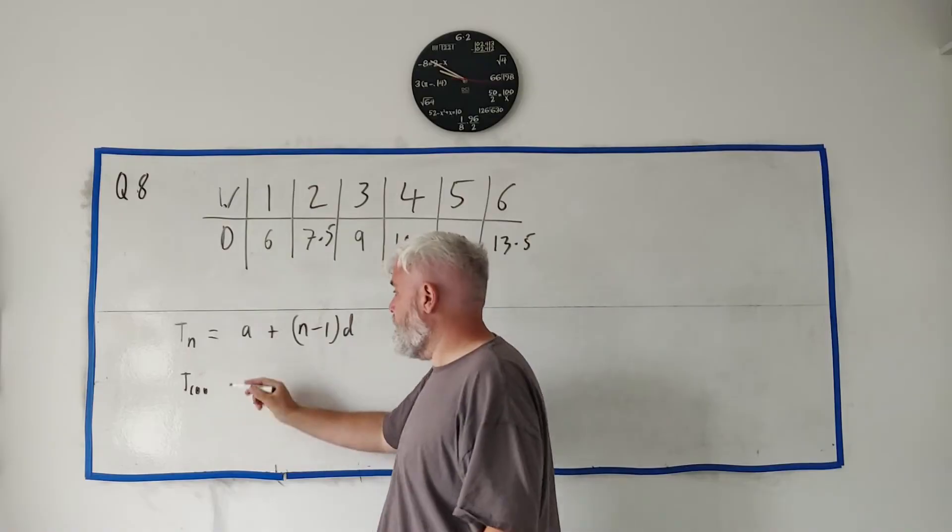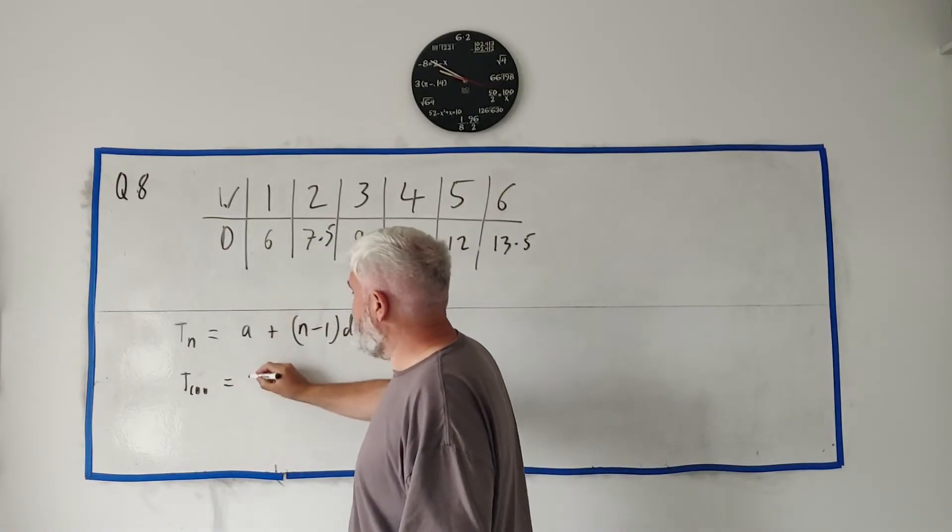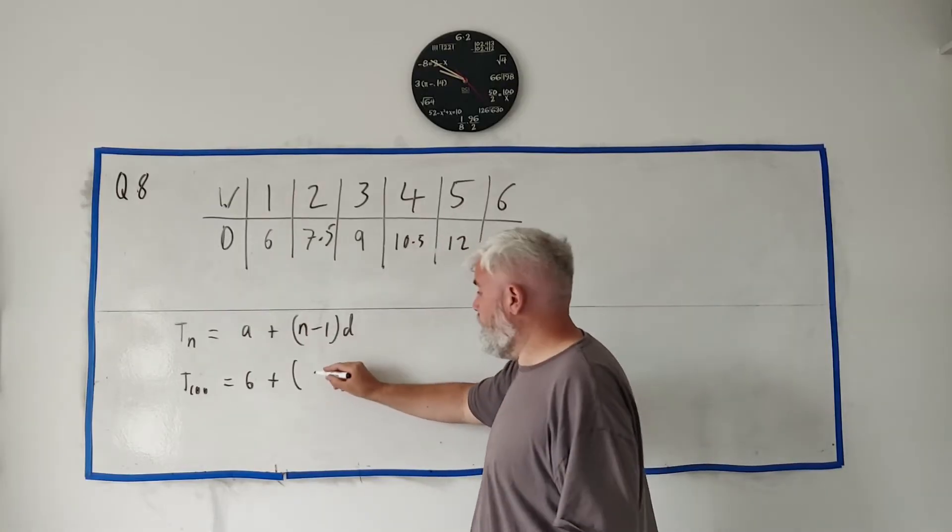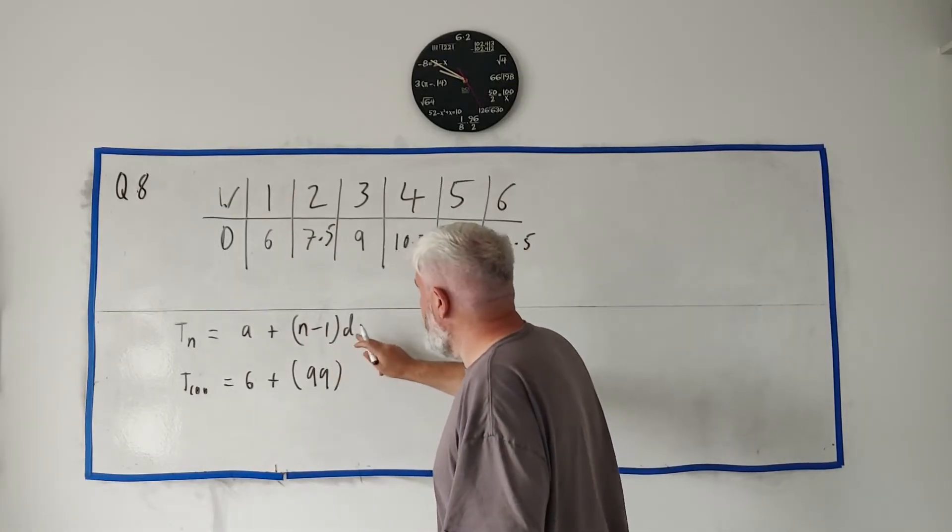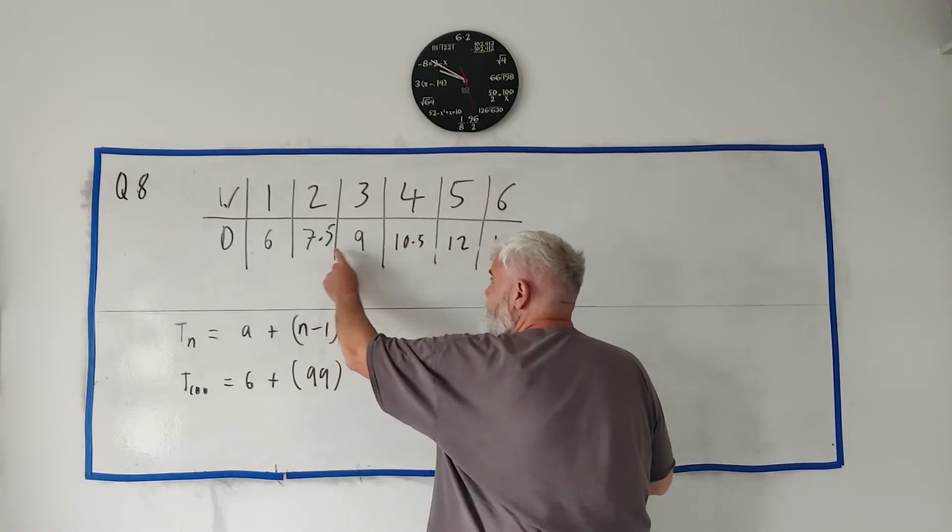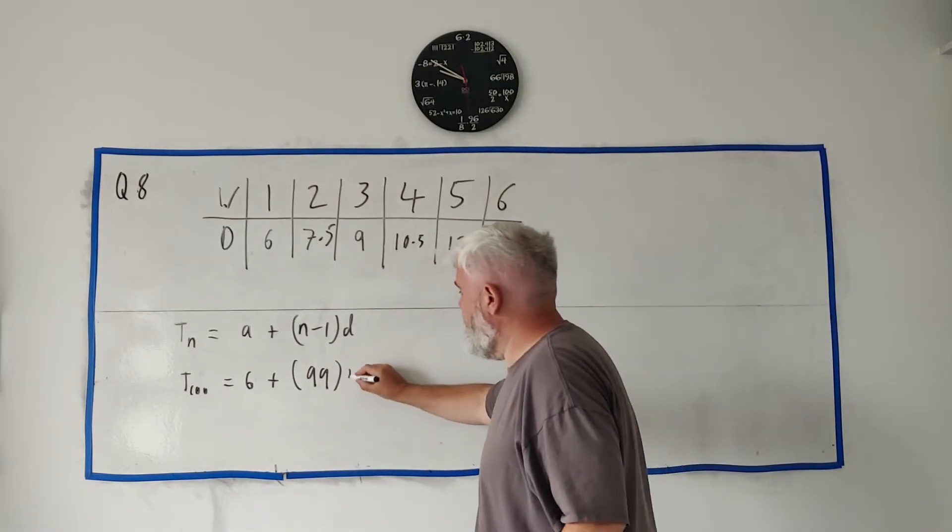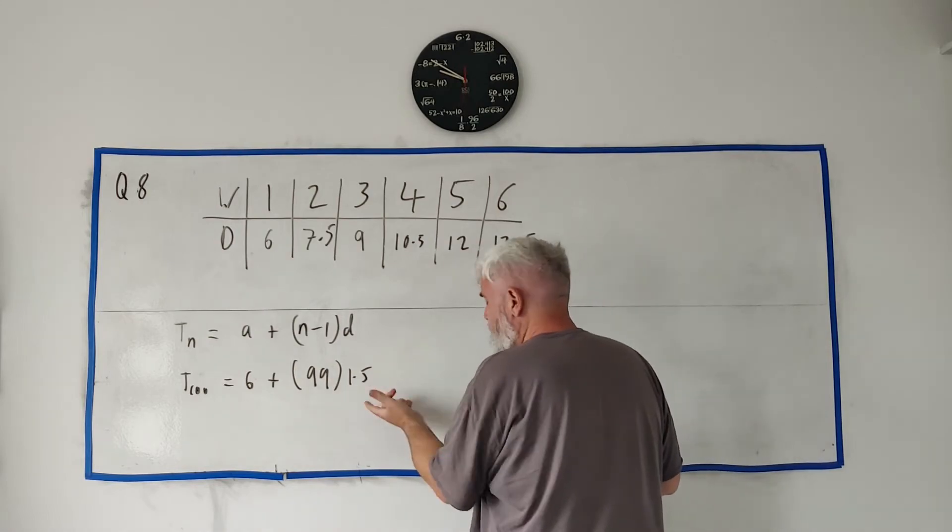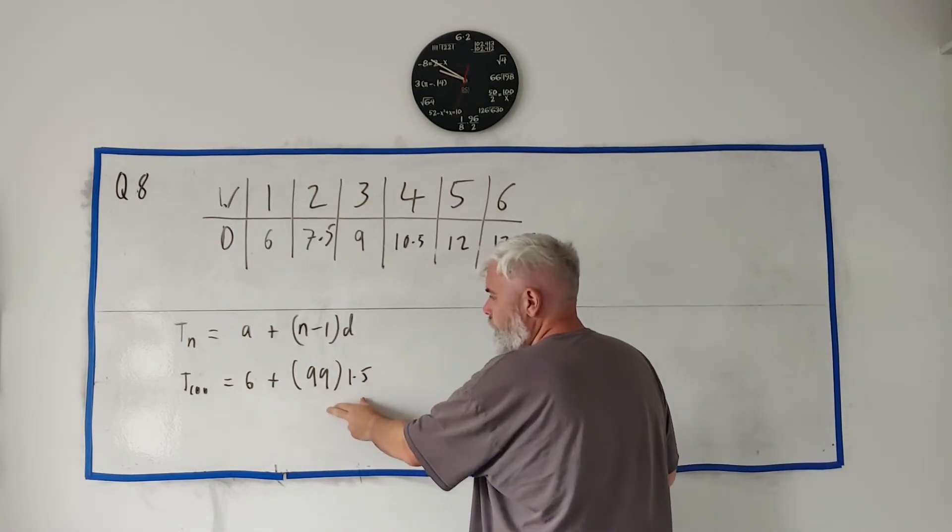We know what a is: it's 6. We know what n is: it's 100. 100 minus 1 is 99. And we know what d is: d is the difference here, the common difference, 1.5. Put all this into a calculator or you can do it yourself slowly.